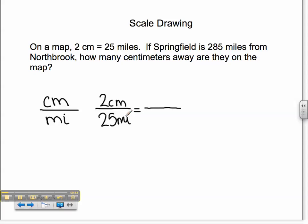I then know that Northbrook is 285 miles from Springfield. Since miles is across the bottom of my proportion, my 285 will go along the bottom.